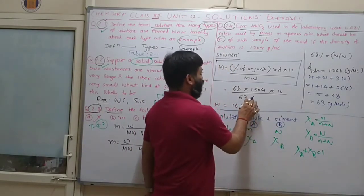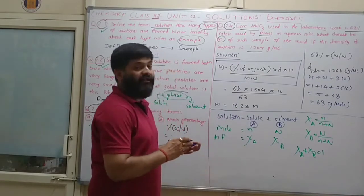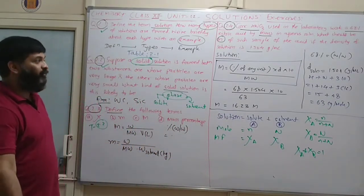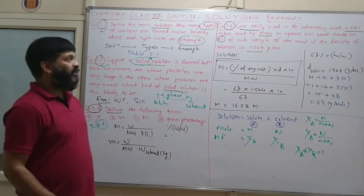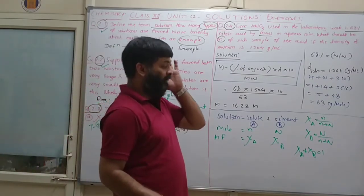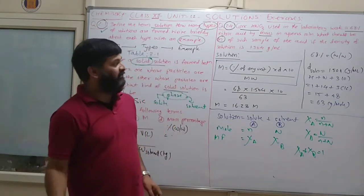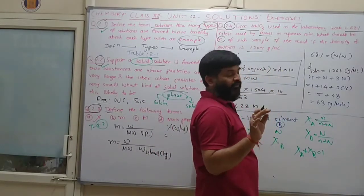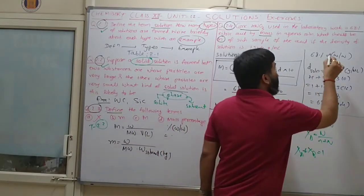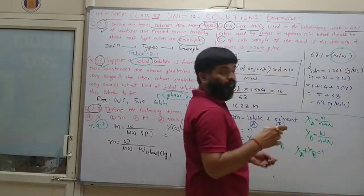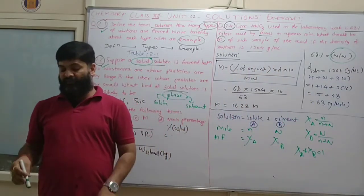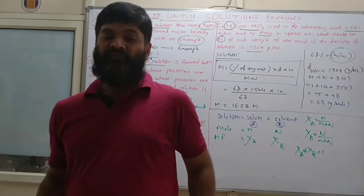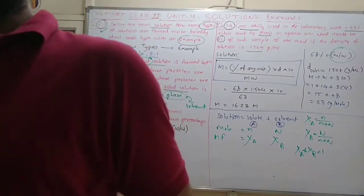The molecular mass of HNO3 is 1 + 14 + 48 = 63 g/mol. Using the shortcut formula with 68% weight by weight, the molarity comes out to be 16.23 mol/L.